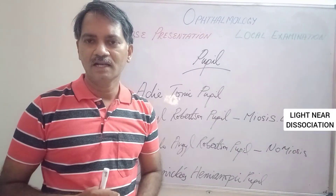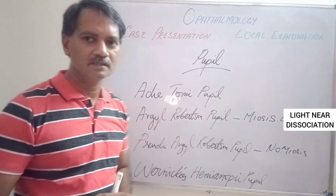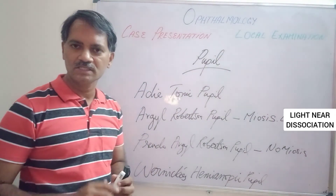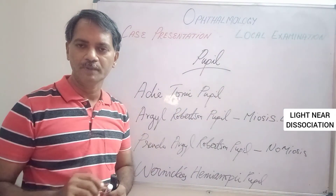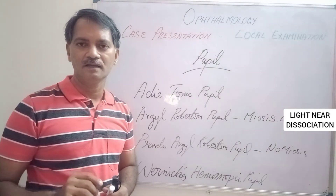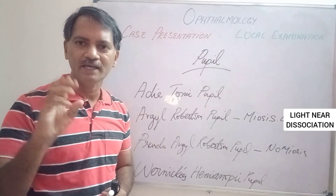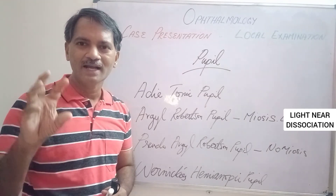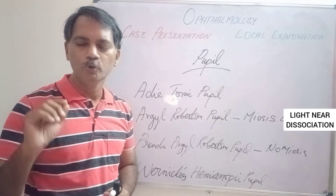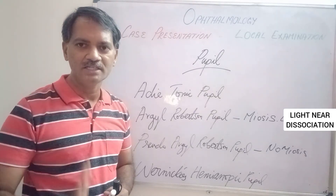The next abnormality is the Adie's tonic pupil. The pupil is dilated and when you throw light on the eye, it takes a very long time to constrict. This is usually seen in ciliary ganglion lesions.